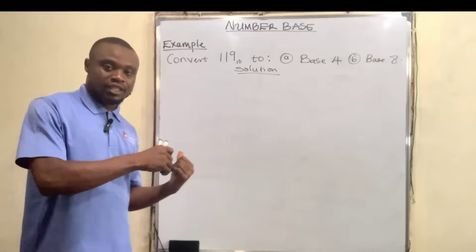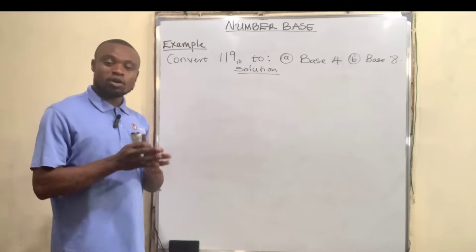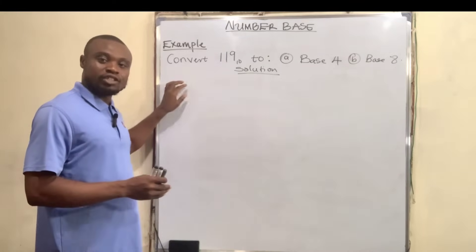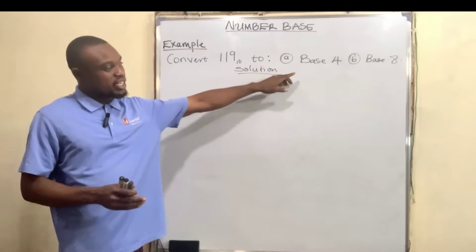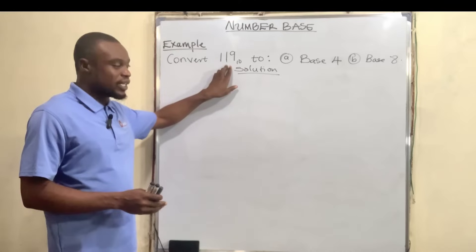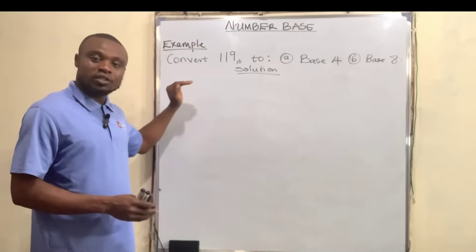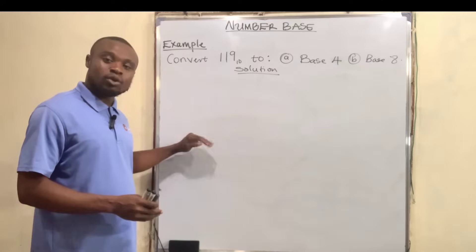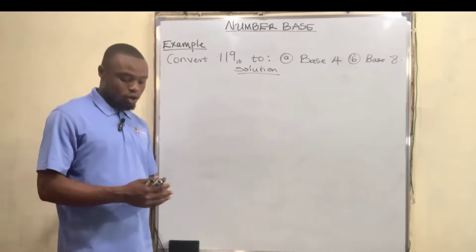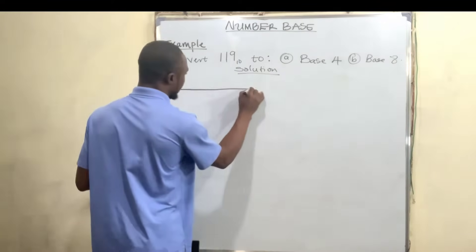In converting this particular number, we're going to draw a cross line where we write the new base, which is 4, and the number itself, which is 119. Then we'll write our remainder. We're going to divide 119 until we get a zero. In each of the steps, we'll write our remainders accordingly.